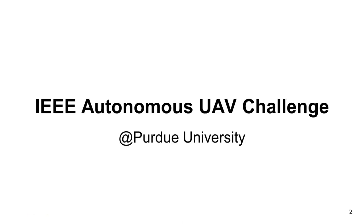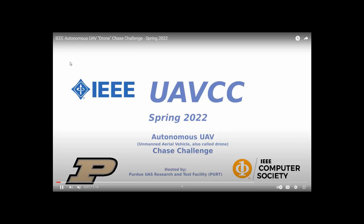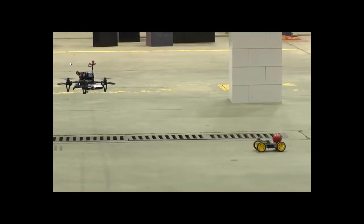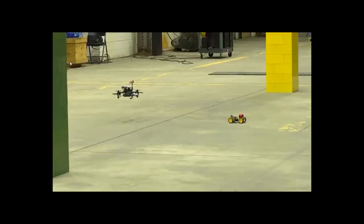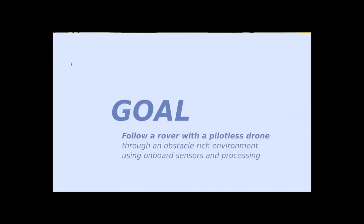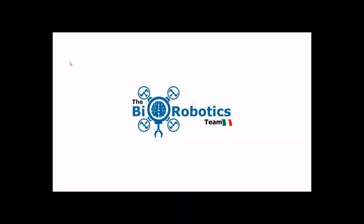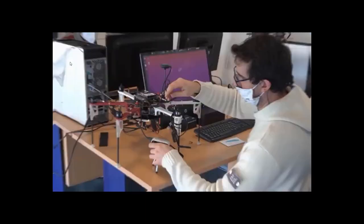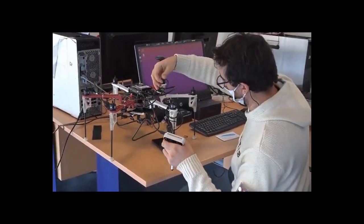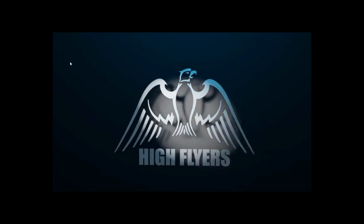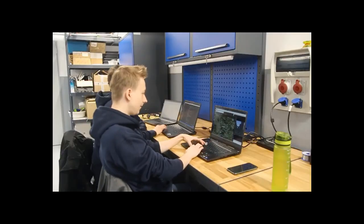Let me first show you a video. This is the 2020 IEEE Autonomous UAV Chess Challenge. This was held on April 9, 2022 on Purdue campus. For this competition, an autonomous UAV has to follow a ground rover in an environment with obstacles. This UAV relies on computer vision to detect the movement of a rover and also the presence of obstacles.